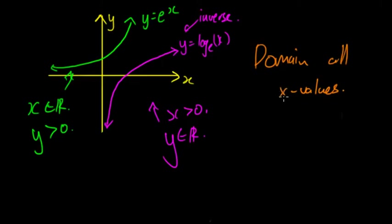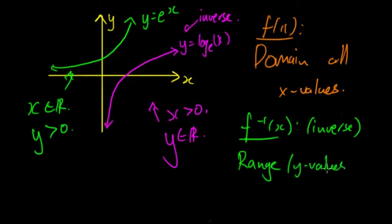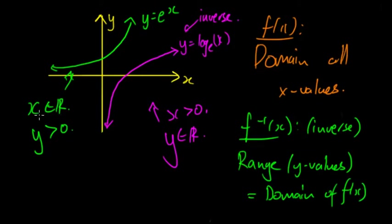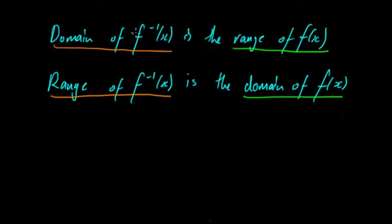With the inverse, you swap x and y, so the domain — which referred to all x values — now refers to the y values. The domain of f⁻¹(x) is going to be all the y values of f(x). So the range of f⁻¹(x) equals the domain of f(x), and the domain of f⁻¹(x) equals the range of f(x). If you know the domain and range of f(x), then you know the domain and range of the inverse.